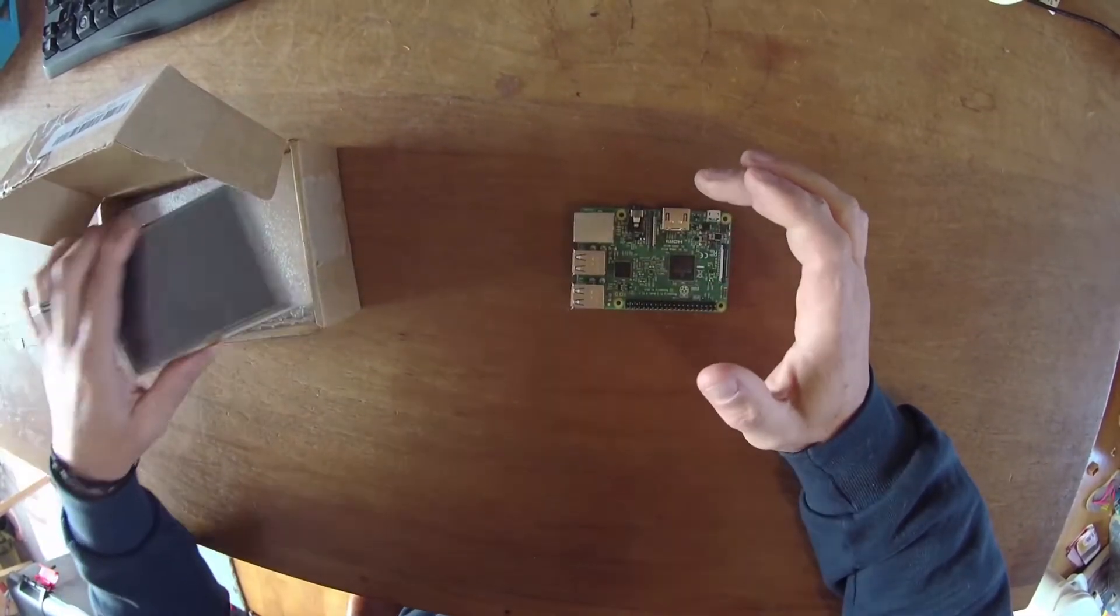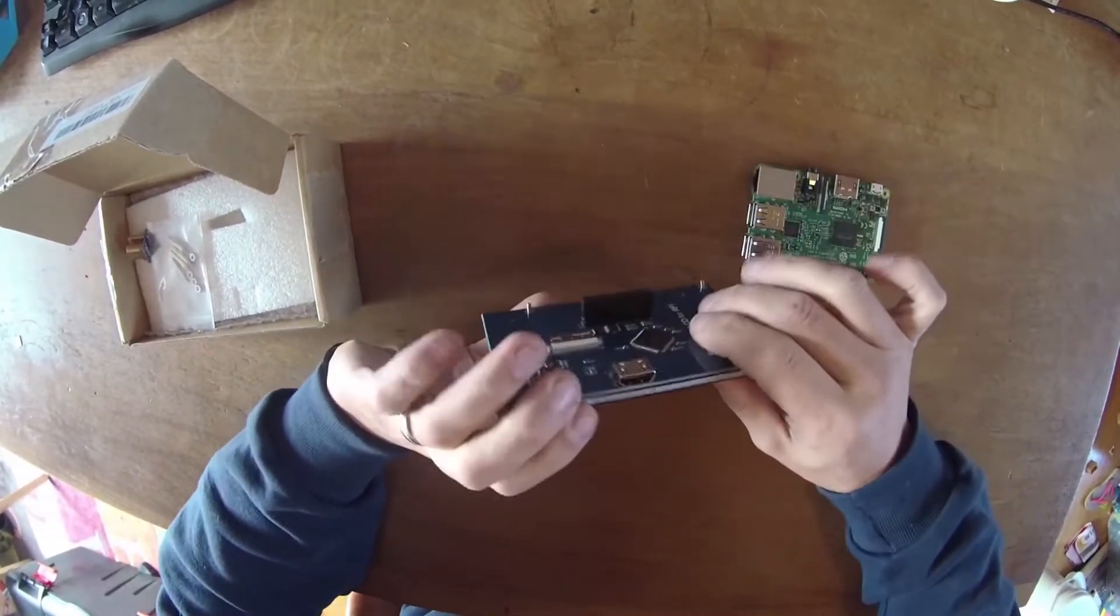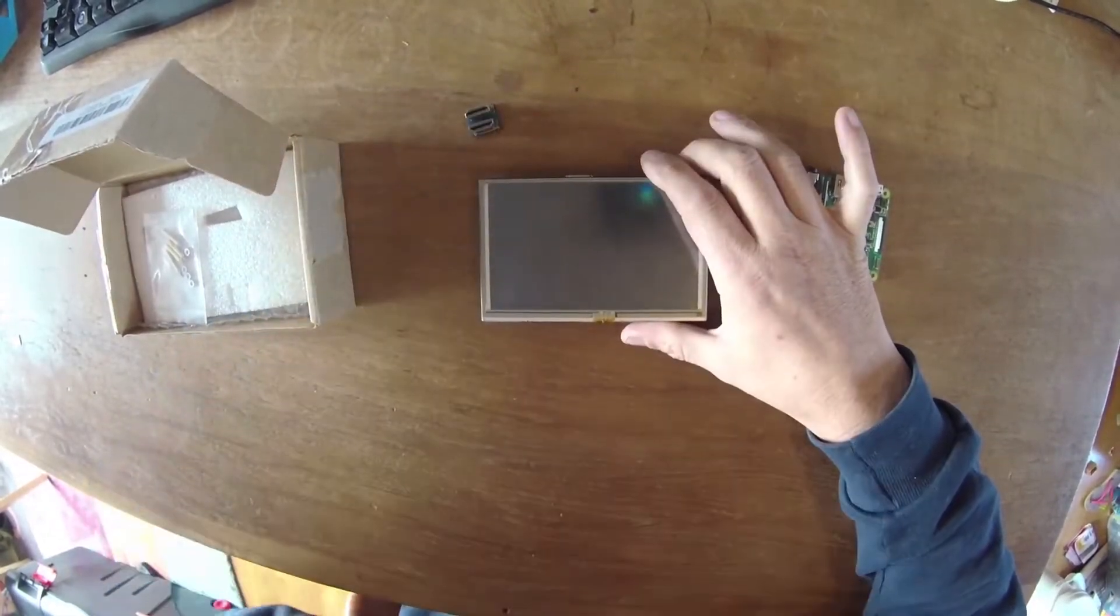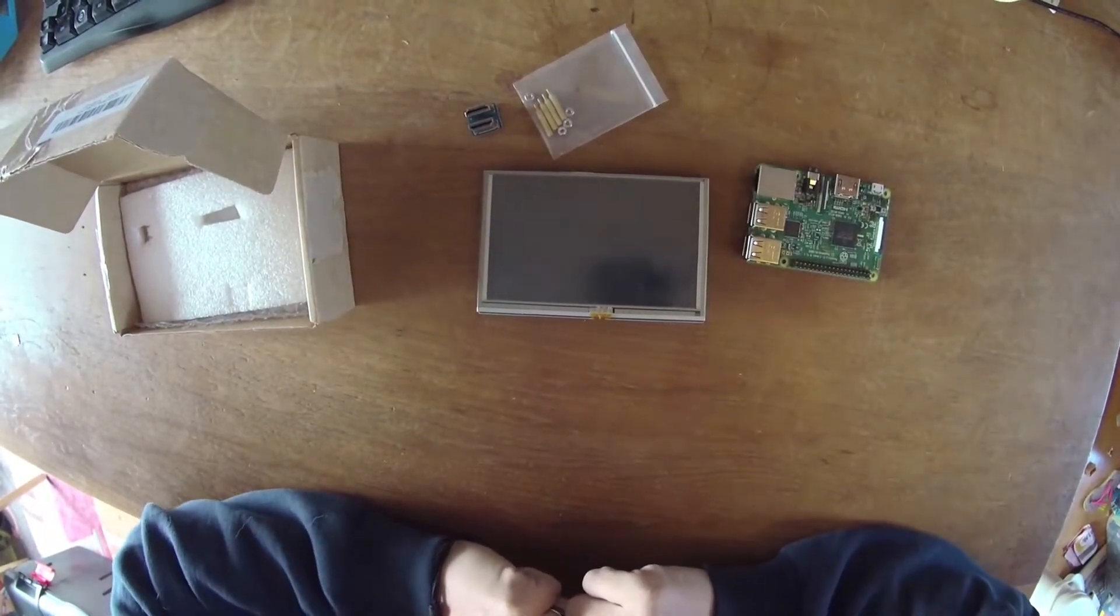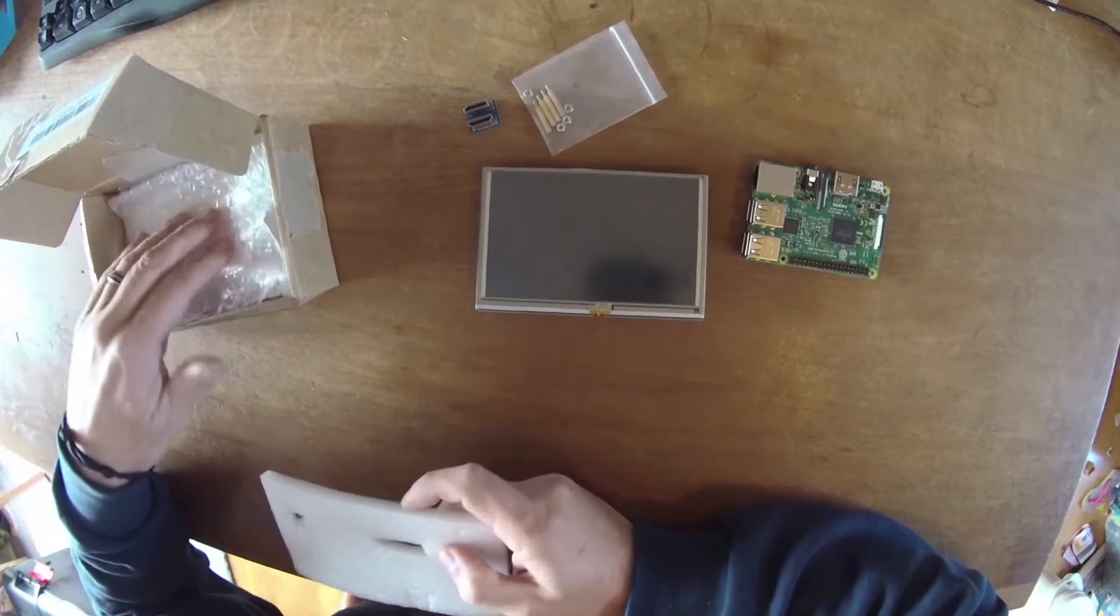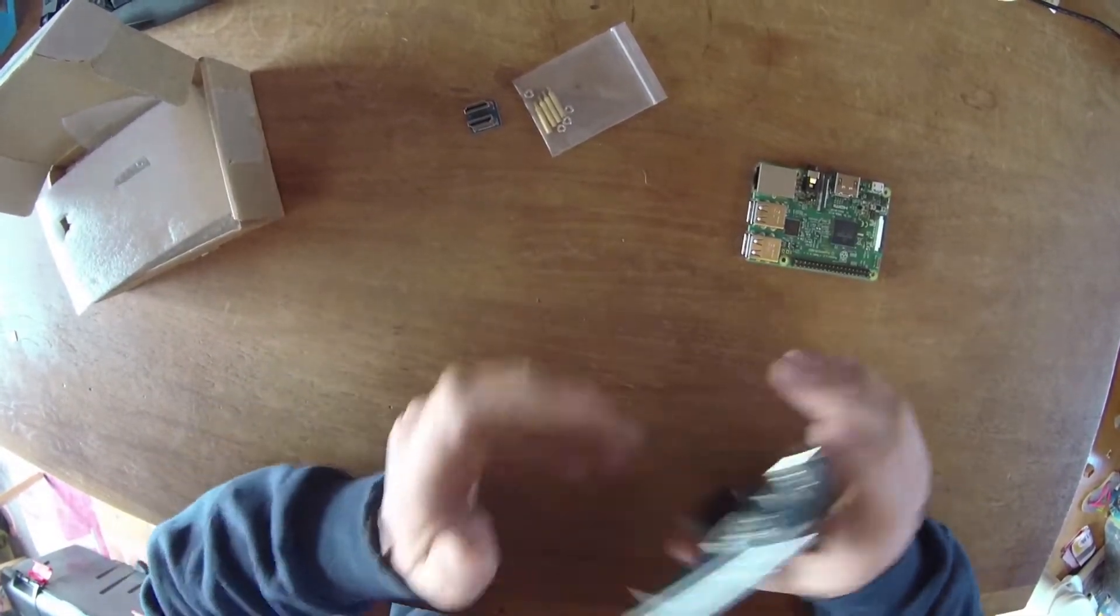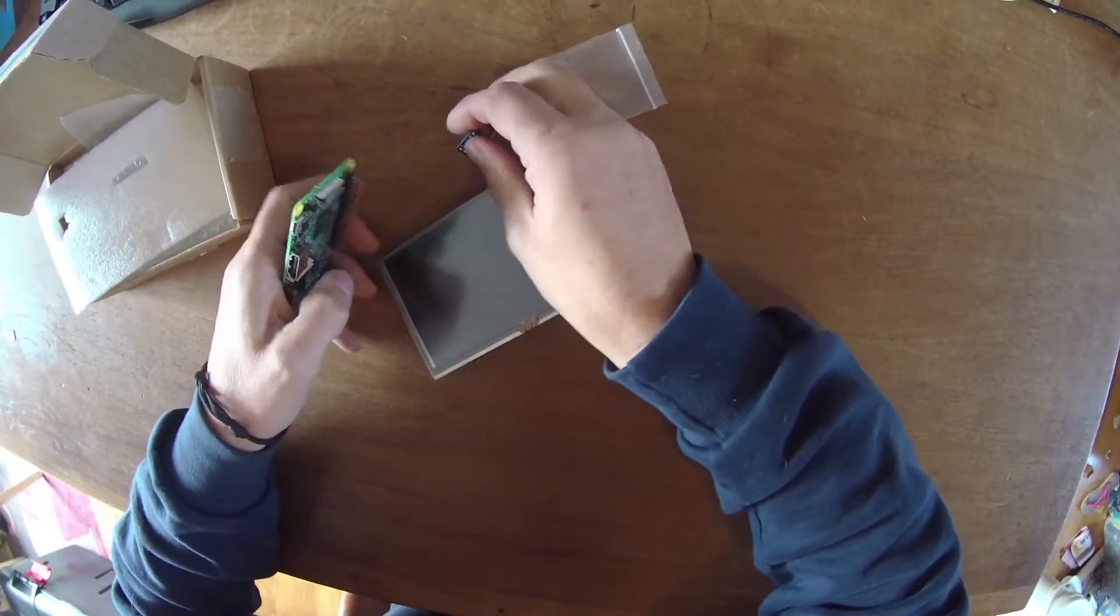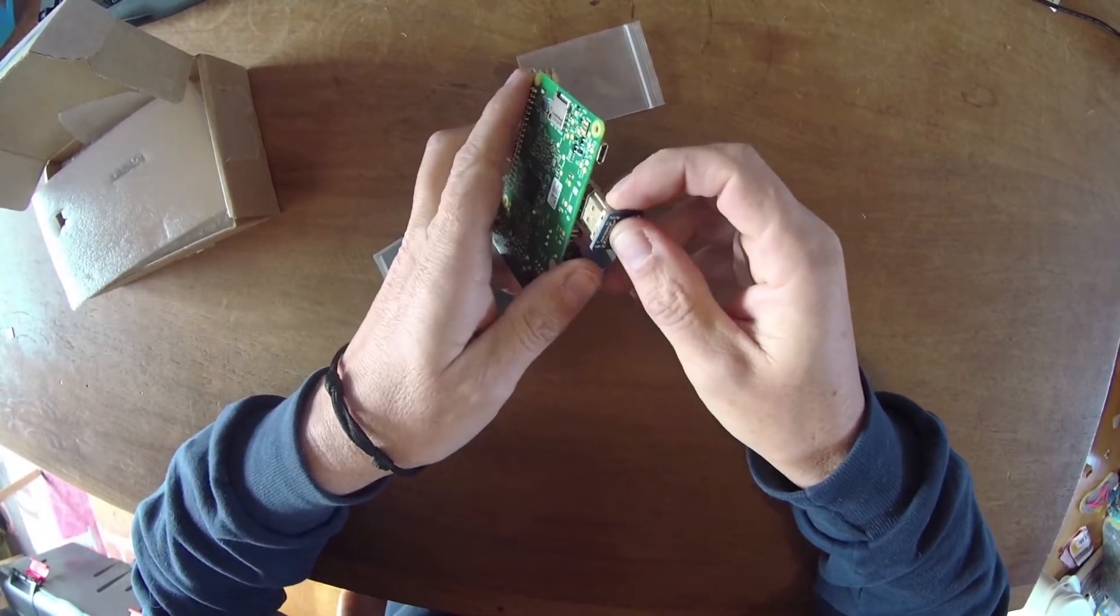First thing, the setup. The five-inch screen comes with an HDMI bridge to connect to the Raspberry Pi, some nuts, and also a touch pen that I've lost, but it doesn't matter. So the setup, as you can imagine: this will be doing the link between the HDMI output of the Raspberry Pi and the touchscreen.